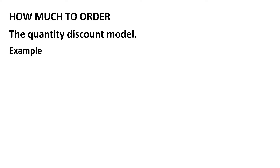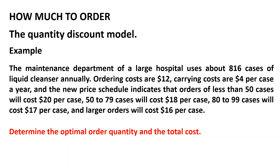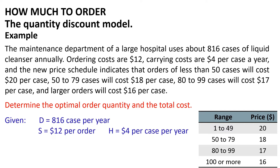Let us now solve an example. The maintenance department of a large hospital uses about 816 cases of liquid cleanser annually. Ordering costs are $12, carrying costs are $4 per case per year, and the price schedule is: less than 50 cases at $20 per case, 50–79 cases at $18 per case, 80–99 cases at $17 per case, and larger orders at $16 per case. Determine the optimal order quantity and the total cost. The givens are: D = 816 cases per year, S = $12 per order, H = $4 per case per year.